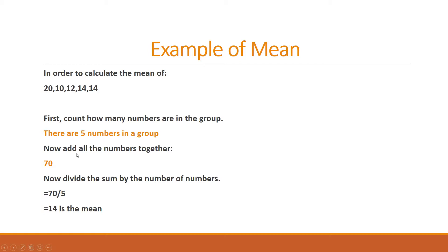Then you have to add all the numbers together: 20 plus 10 plus 12 plus 14 plus 14 which equals 70. Now divide the sum by the number of numbers. This total is 70 and we have five numbers in a group, so divided by 5, 14 is the mean.